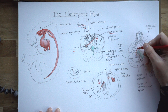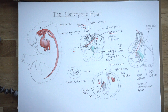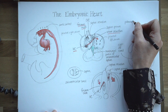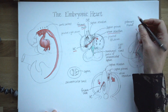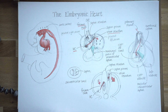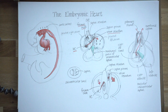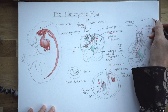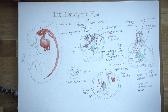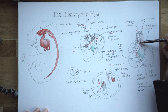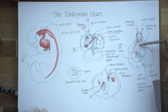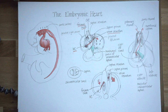Blood coming from the right atrium passes through the right ventricle up into the pulmonary channel — eventually the pulmonary trunk. On the other side, blood from the left ventricle spirals around the pulmonary channel in the aortic channel, headed for the ascending aorta. When we look at the front of an adult heart, we see those two vessels spiralling around each other — and that's all set up by this spiralling septation of truncus arteriosus and conus cordis in the embryo.